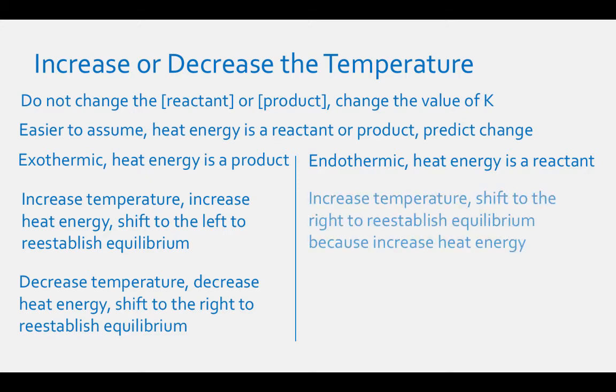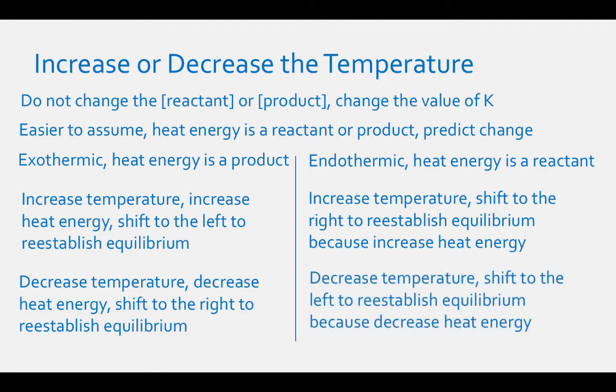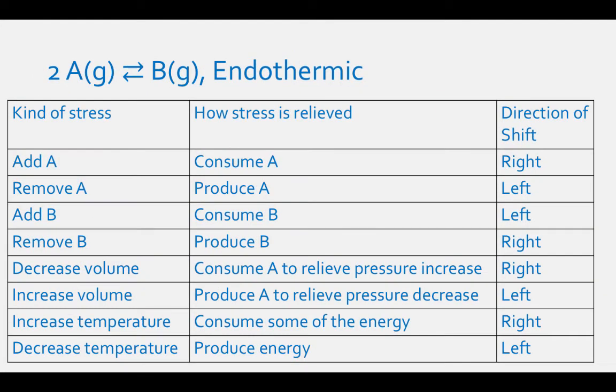For an endothermic reaction, if we increase the temperature, the reaction will shift to the right because we increased the heat energy. And if we decrease the temperature of an endothermic reaction, the reaction will shift to the left because we decreased the heat energy. See this table for our generic equation, 2A gas in equilibrium with B gas, if the reaction is endothermic, showing the stresses we can apply, how the stresses are relieved, and which direction the reaction will shift.